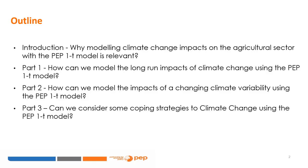Welcome to this module on how the PEP1T model can be used to model climate change impacts on the agricultural sector. The aim of this module is to offer an overview of the following aspects: one, why modeling climate change impacts on the agricultural sector with the PEP1T model is relevant; two, how modeling long-term climate change and shorter-term climate variability impacts; and three, can we consider adaptation options to climate change with the PEP1T model?